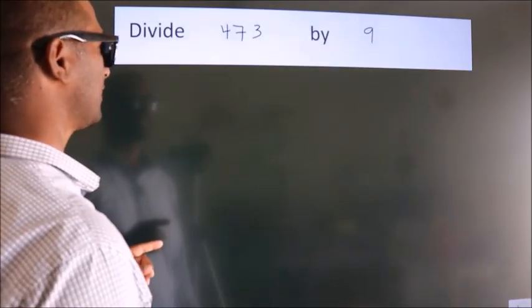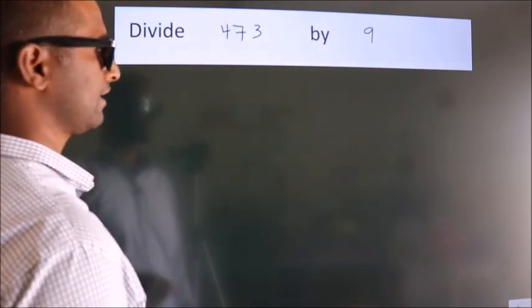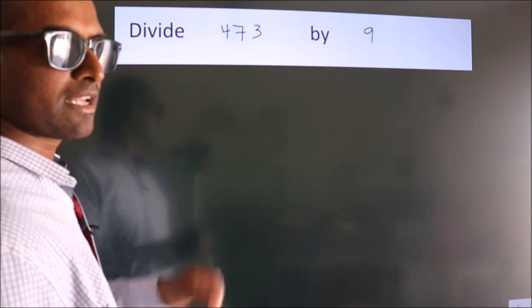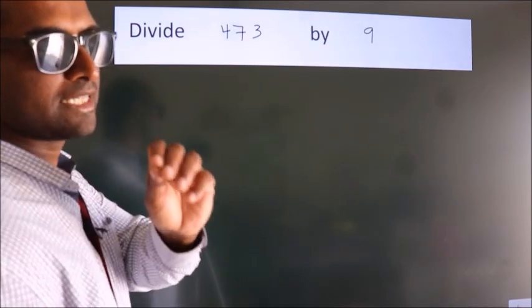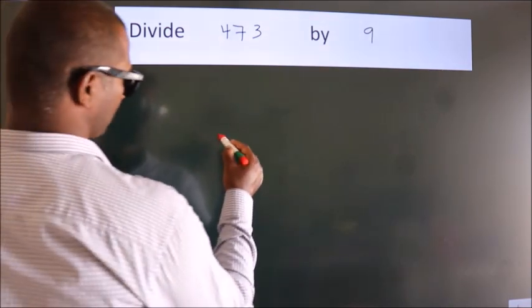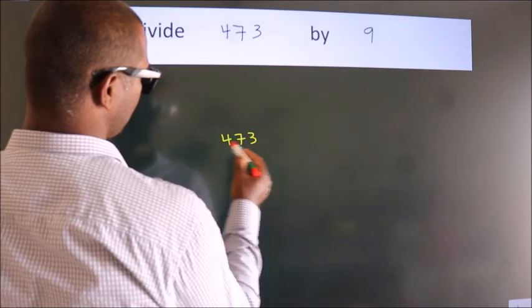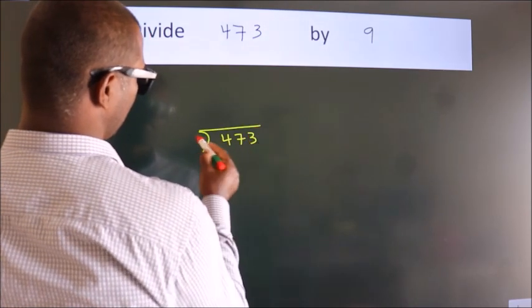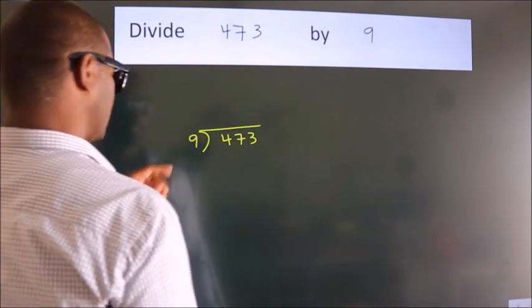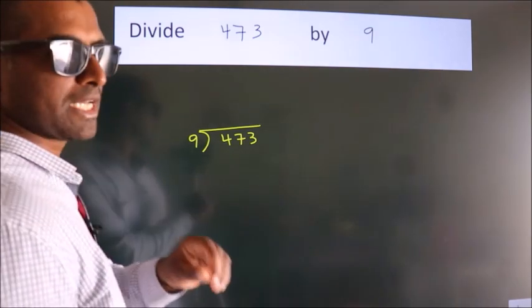Divide 473 by 9. To do this division, we should frame it in this way: 473 here, 9 here. This is step 1.